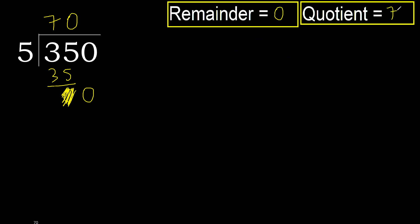The answer is 70. So 350 divided by 5 is 70.